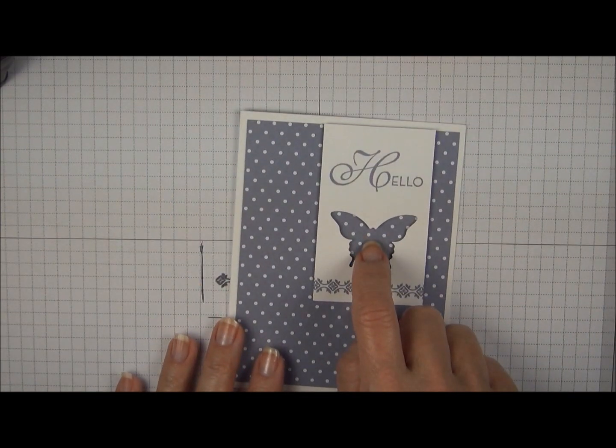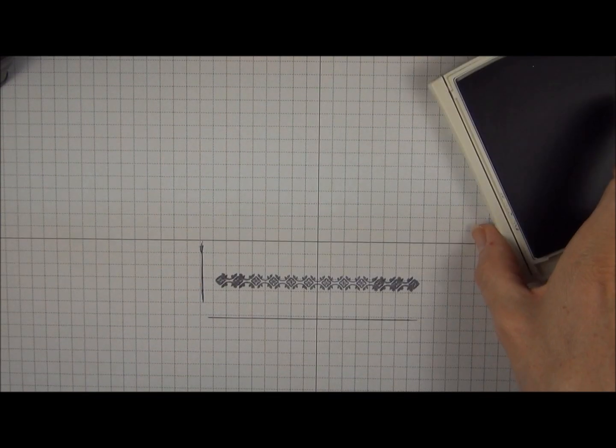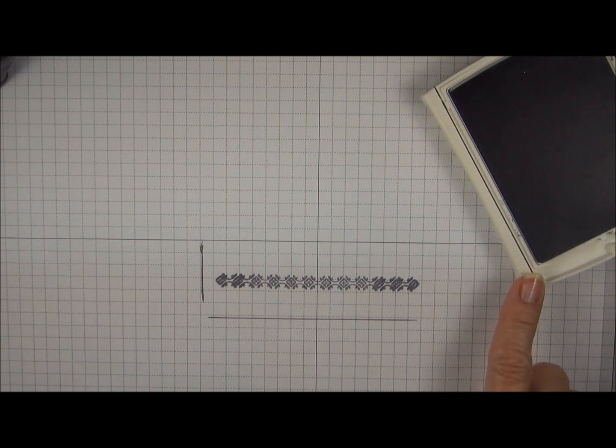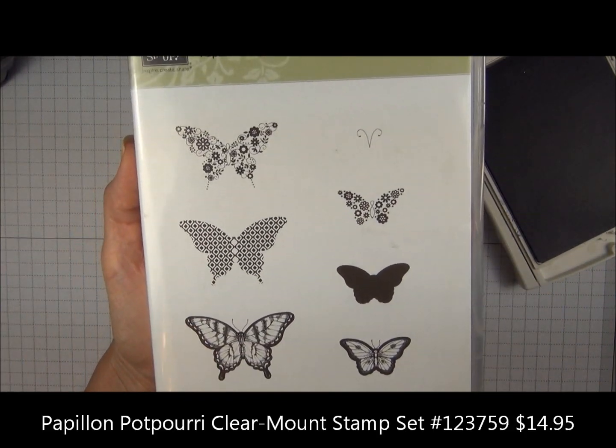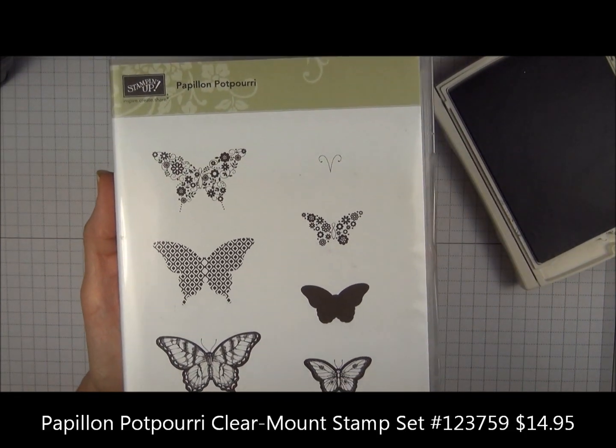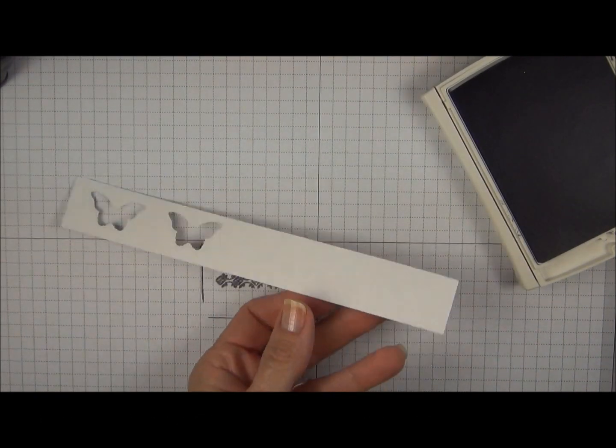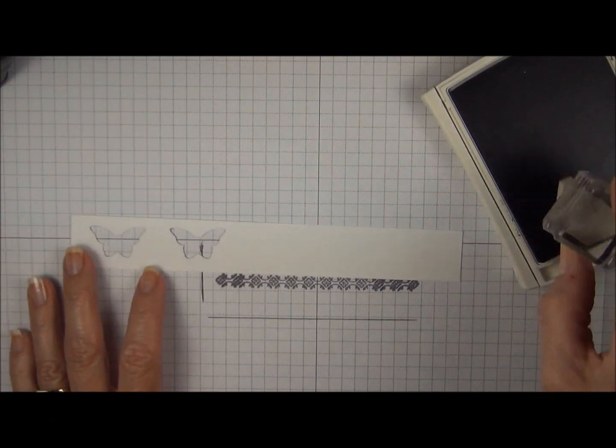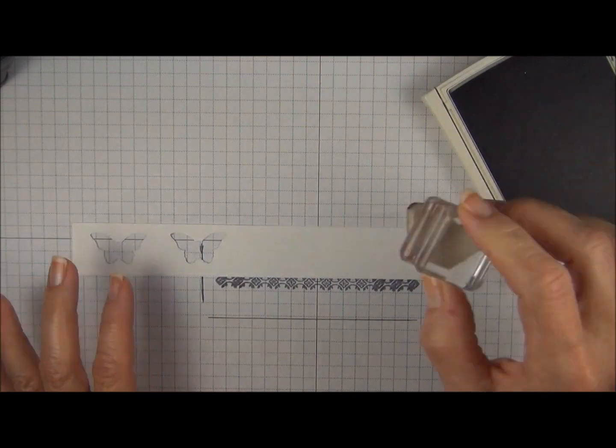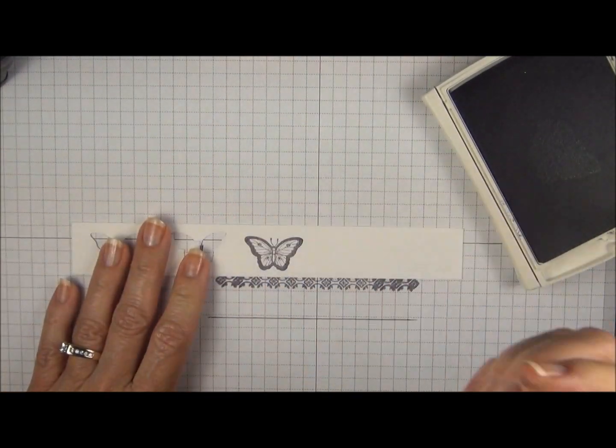So now we're going to add a little butterfly in the center. We're going to go back to Wisteria Wonder ink and we're going to use a stamp set called Papillon Potpourri. We're going to stamp this on scrap Whisper White cardstock. Just tap, tap on your ink pad. Press firmly on the paper.